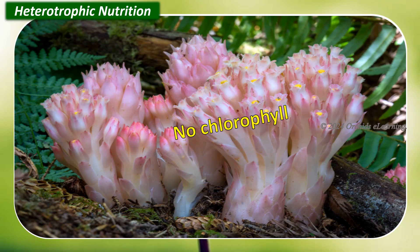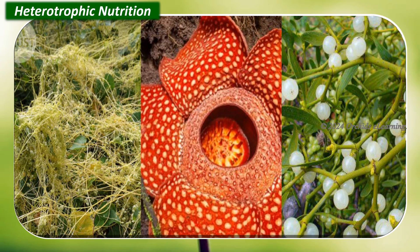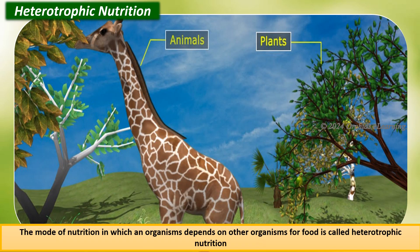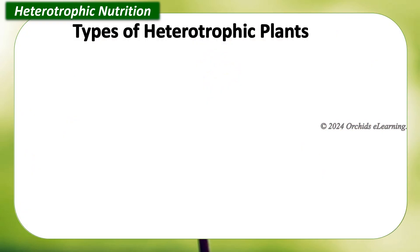Heterotrophic nutrition: some plants do not contain chlorophyll, and some grow in places where they do not get enough light. Such plants cannot carry out photosynthesis and depend on other organisms for nutrition. The mode of nutrition in which an organism depends on other organisms for food is called heterotrophic nutrition. Organisms that follow this mode are called heterotrophs. There are four types of heterotrophic plants: parasitic, saprophytic, insectivorous, and symbiotic.